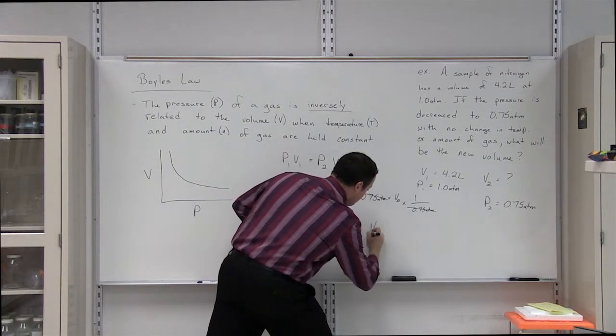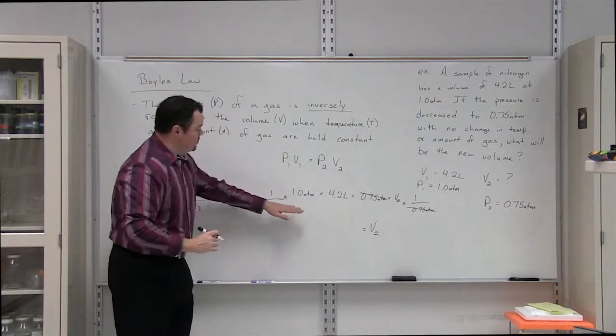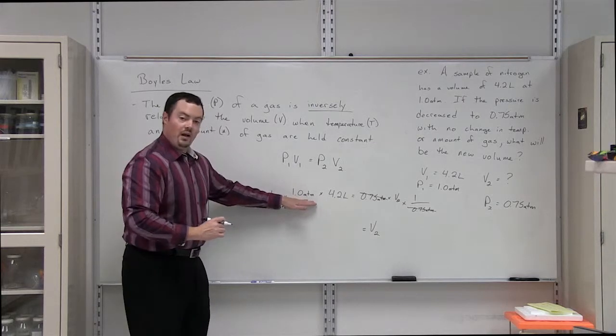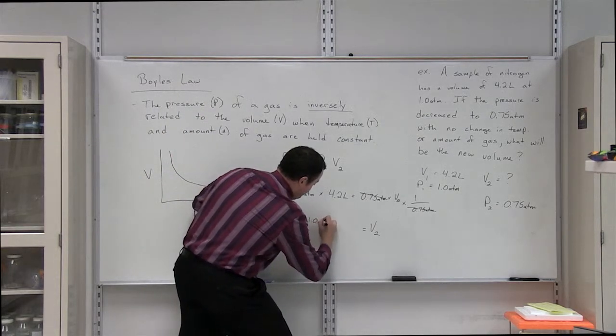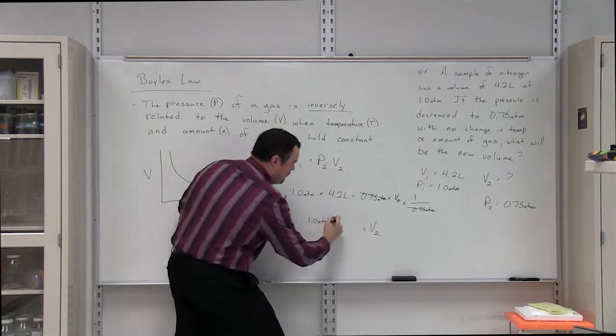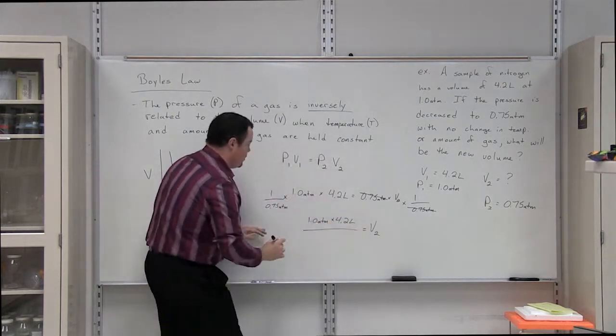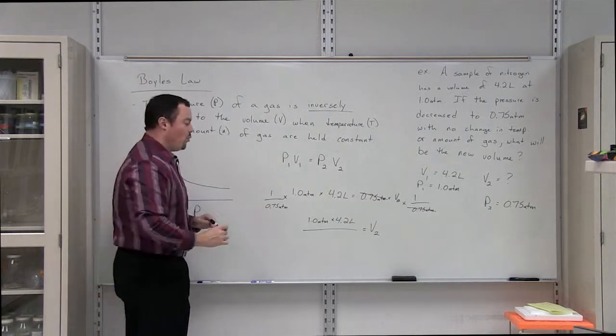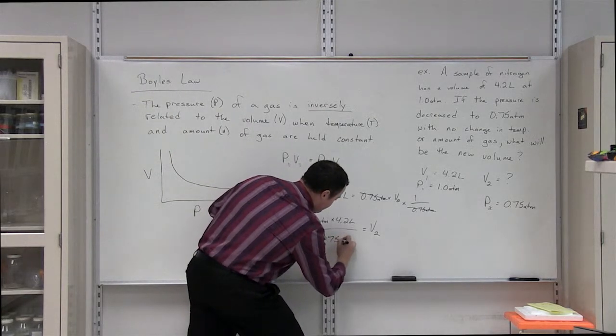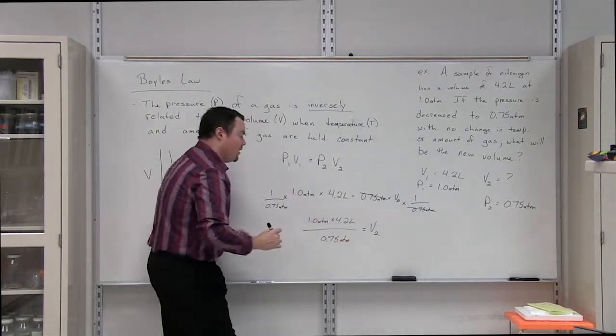So, when we clean this equation up, we find that V2 equals 1 multiplied by 1 multiplied by 4.2 liters, and all of that's going to be divided by 0.75 atmospheres.